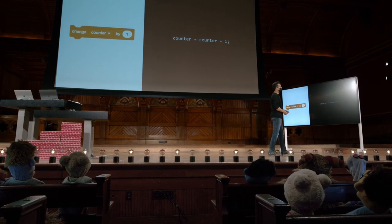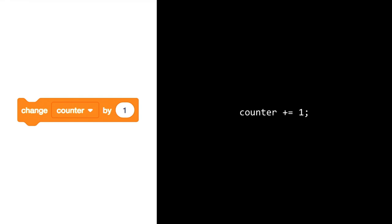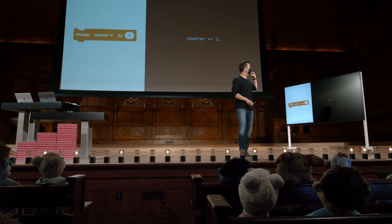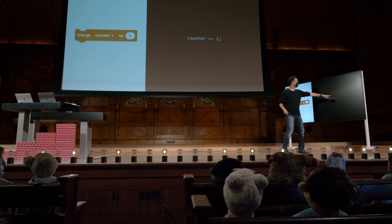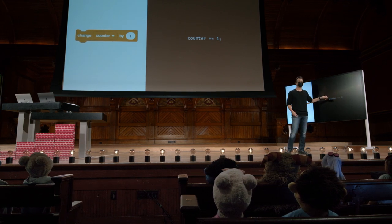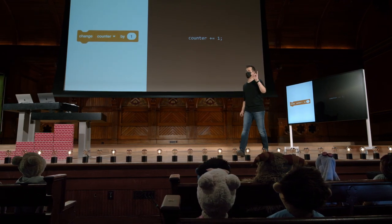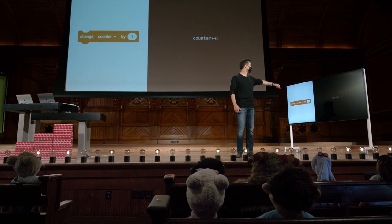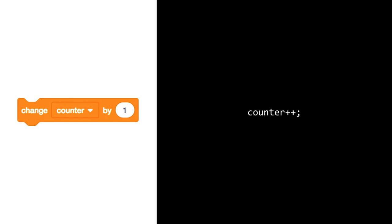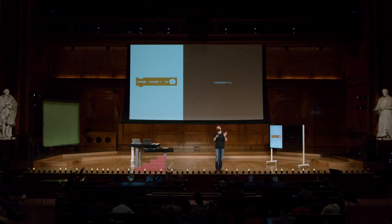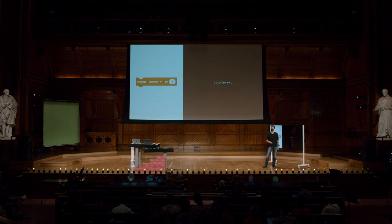Você pode escrever isso de maneira mais sucinta. Este código aqui é o que chamaremos de açúcar sintático — uma maneira sofisticada de dizer a mesma coisa com menos palavras ou menos caracteres na tela. Isso também adiciona um, ou qualquer número que você digitar, à variável à esquerda. E a outra forma de açúcar sintático, ainda mais concisa: counter++ também aumentará o contador em um, literalmente alterando seu valor em um. Ou, se você alterá-lo para menos, subtraindo um dele. Você pode fazer isso com mais ou menos, adicionando ou subtraindo um.